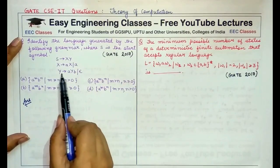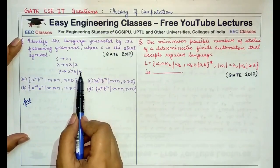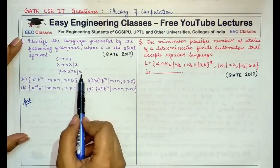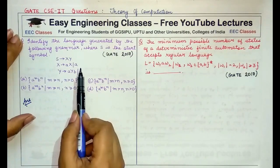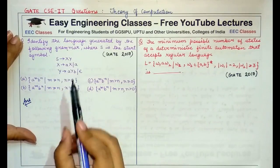Since it is given that Y can also be epsilon or lambda, then in that case, the string will only be formed by X.